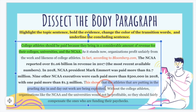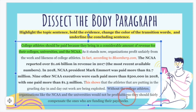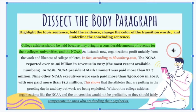Then here's the explanation of what the evidence shows. And finally, the concluding sentence: 'Without college athletes, organizations like the NCAA and the universities would not be profitable, so they should fairly compensate the ones who are funding their paychecks.' I'm going to underline that. As you can see, everything in the paragraph is related to how college athletes should be paid because they bring in a lot of money for colleges, universities, and the NCAA.